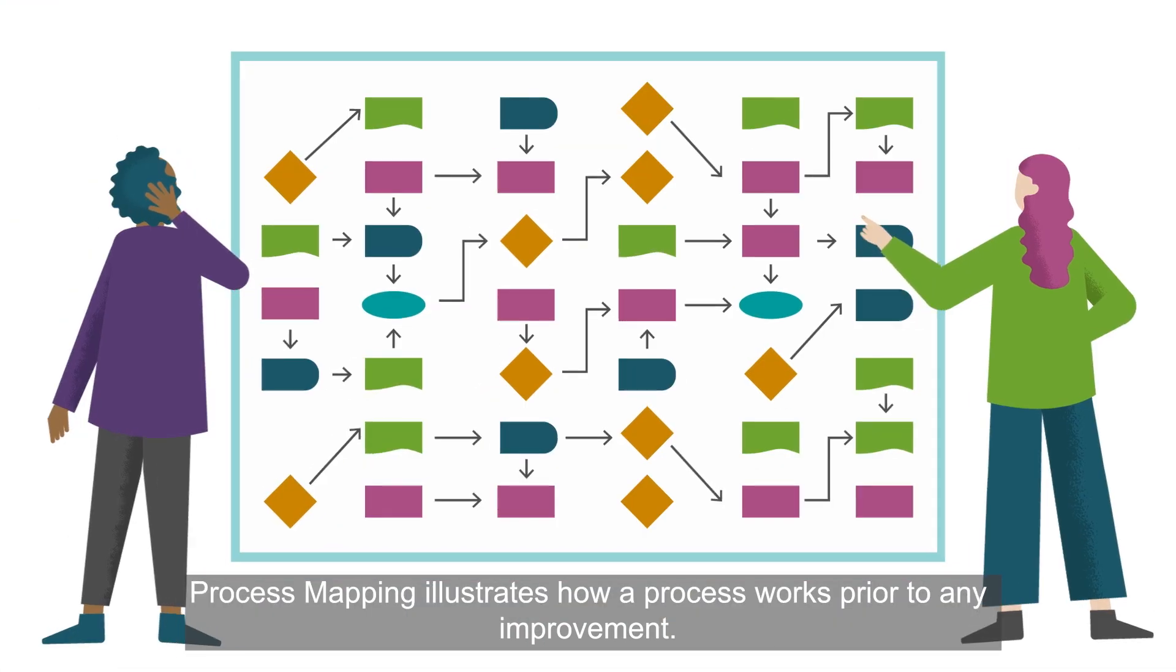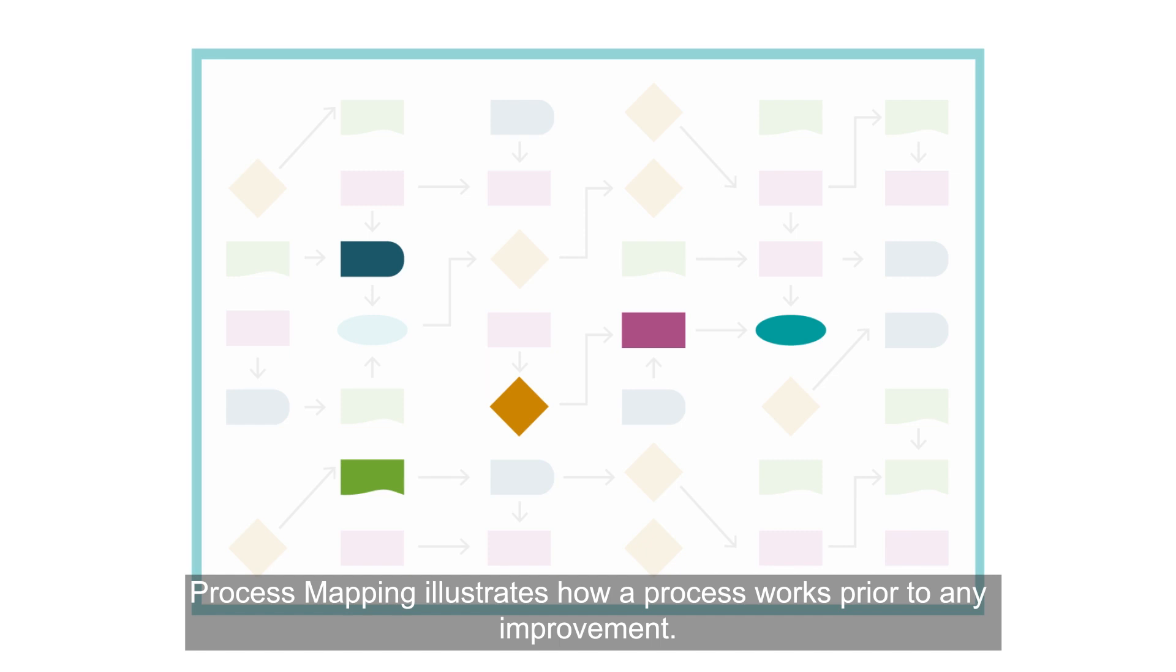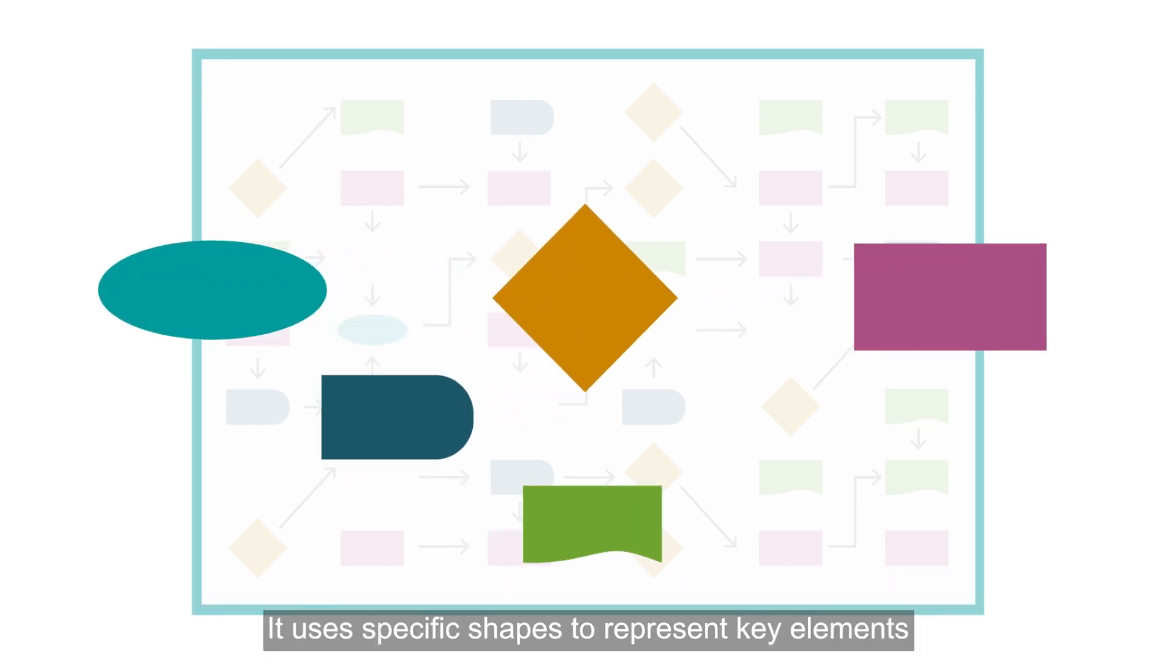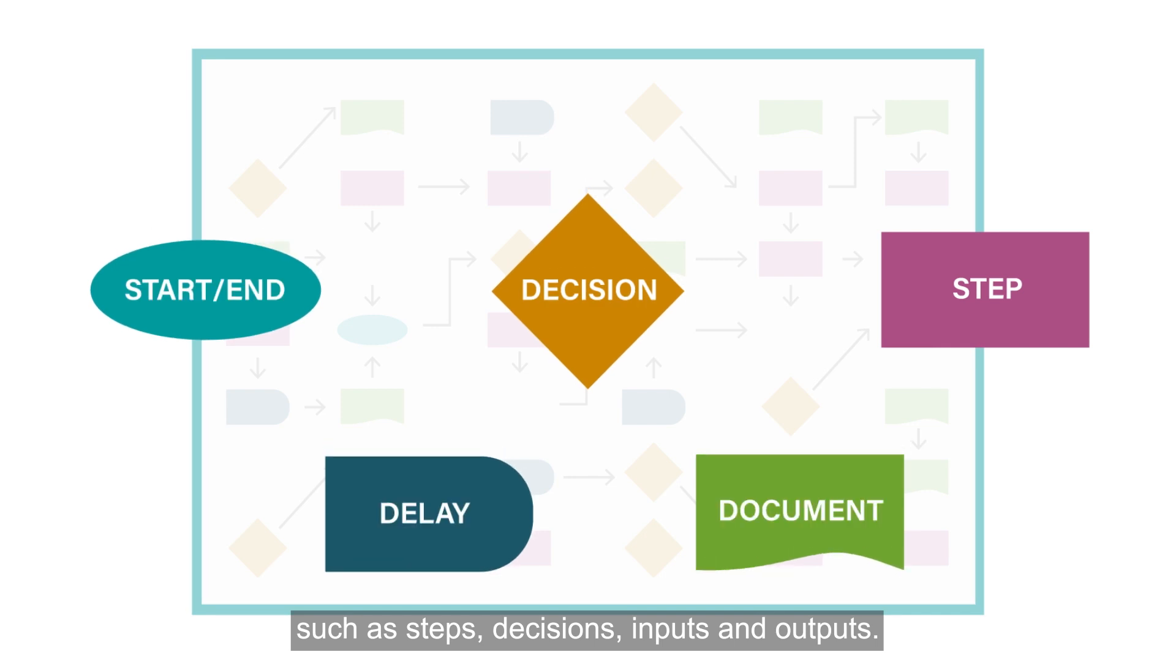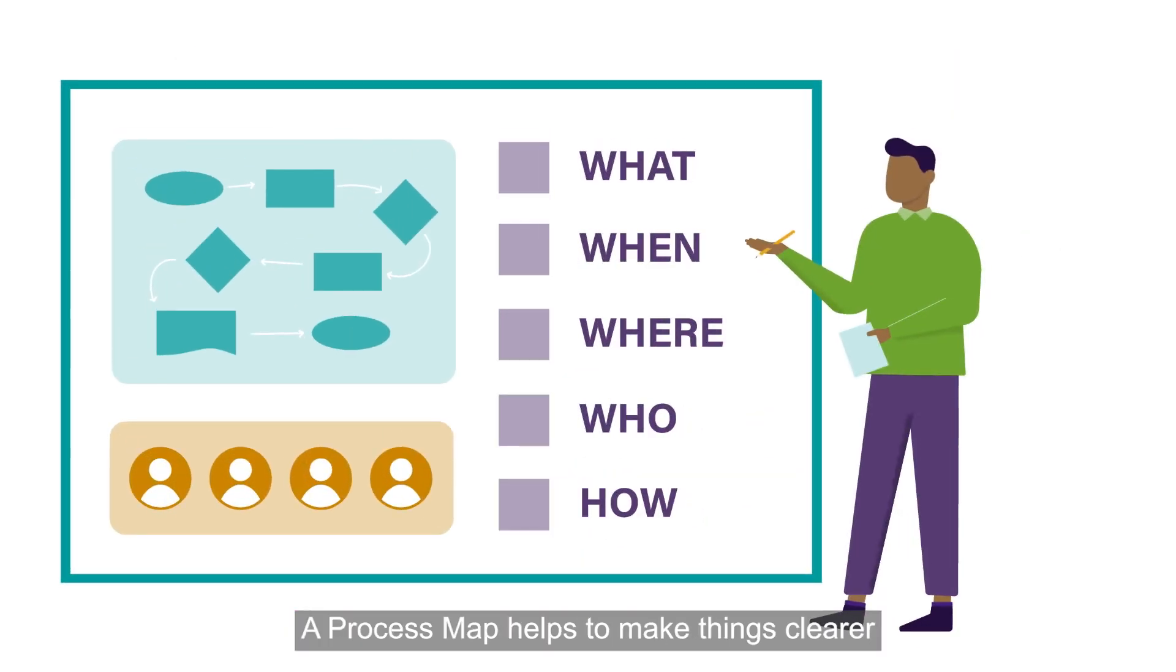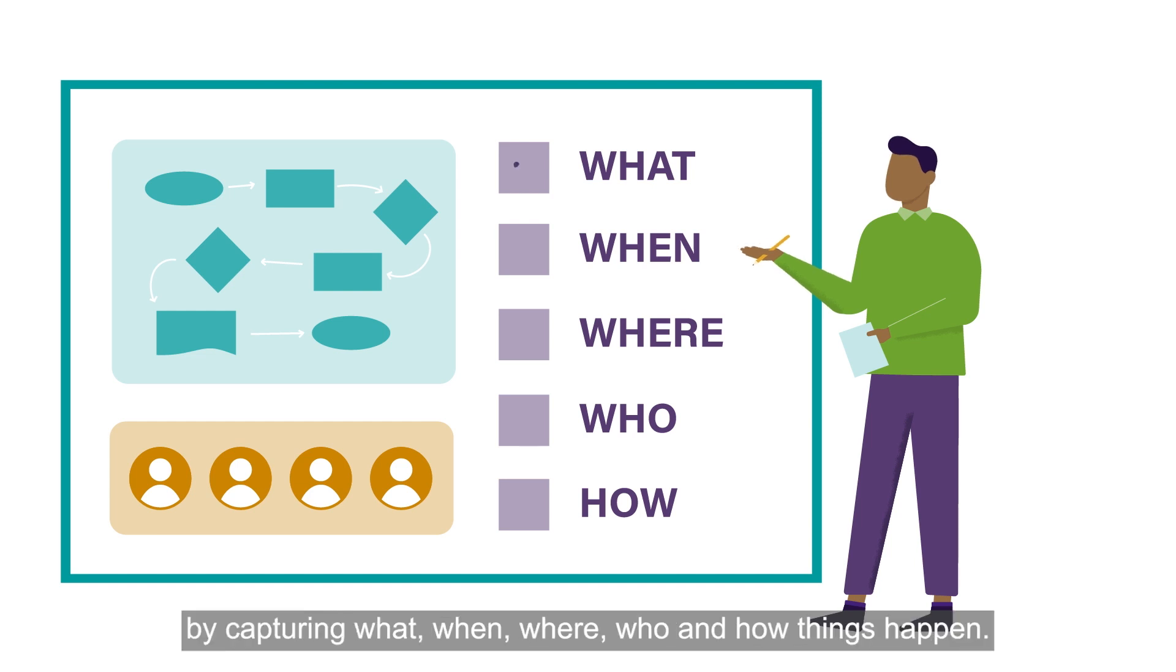Process mapping illustrates how a process works prior to any improvement. It uses specific shapes to represent key elements, such as steps, decisions, inputs and outputs.